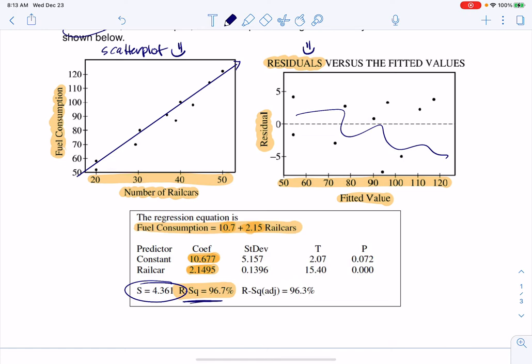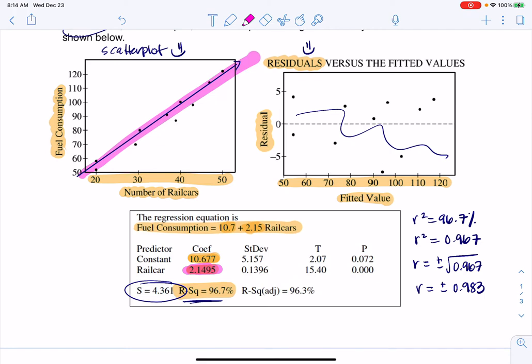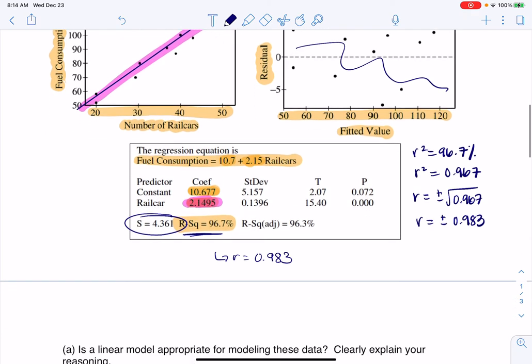Now, my mini tab output doesn't actually give me r. It gives me r squared. But if I know r squared is 96.7%, that would mean r squared was the decimal 0.967. And if I square root that decimal, I'm going to get that r is either positive or negative 0.983. But the thing that I have to take into consideration is that my slope is positive. If my slope is positive, and you can see it here, then r has to be positive. So I can definitively say here r is positive 0.983. And from that, I can build my answer to part A.